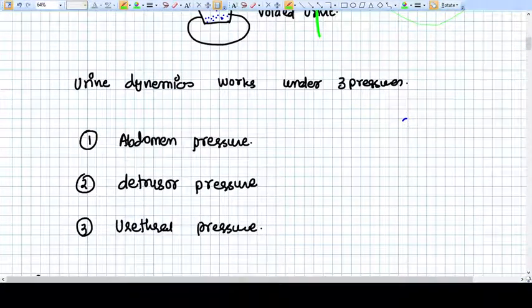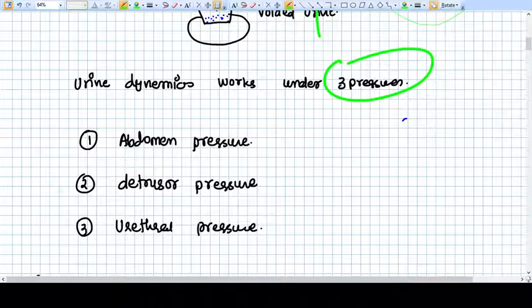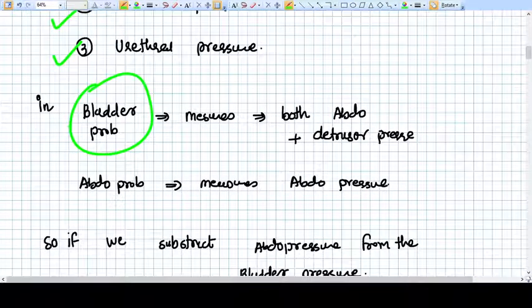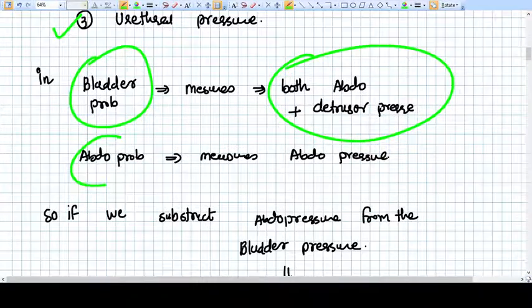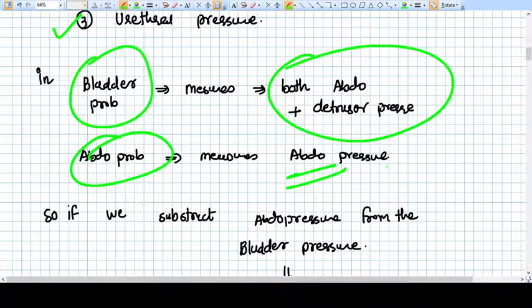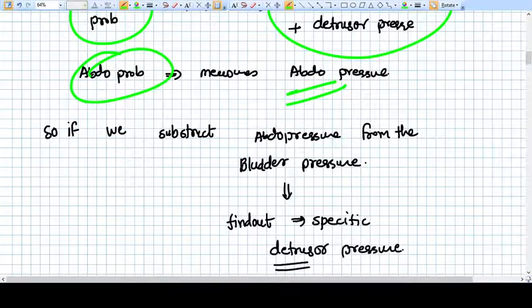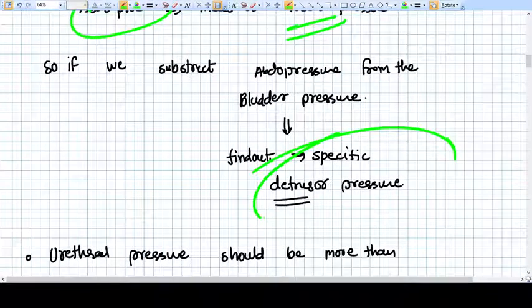Now, as we have described, urine dynamics work under three pressures: abdomen pressure, detrusor pressure, and urethral pressure. The bladder probe measures both abdomen and detrusor pressure. The abdominal probe measures only abdominal pressure. So if we subtract abdominal pressure from the bladder pressure, we will get specific detrusor pressure.